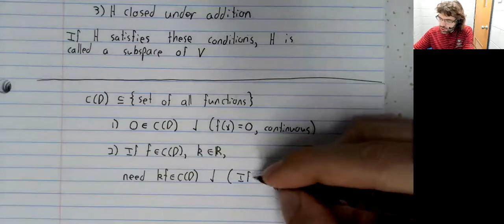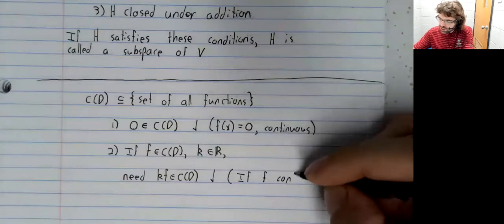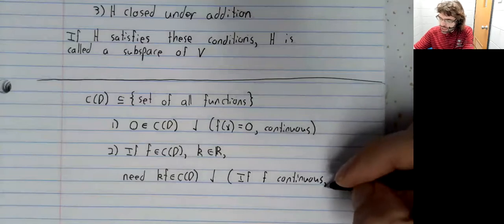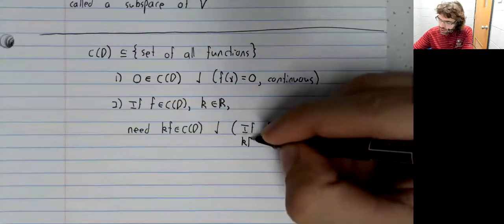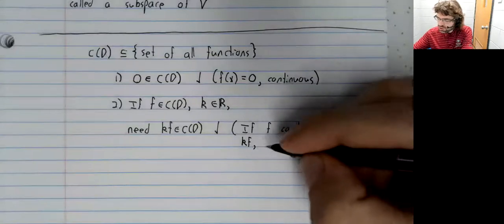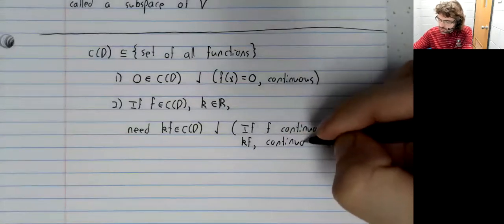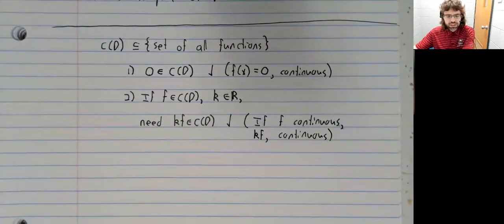It's a theorem from calculus that if we have a continuous function and we multiply it by a constant, the result is continuous.